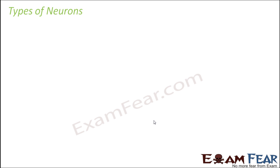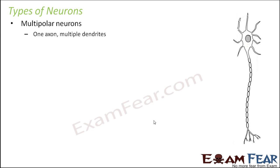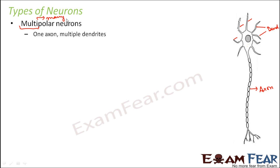We will now talk about the different types of neurons based on their structure. Broadly there are three types. First, multipolar neurons, where you have one axon and multiple dendrites. Please remember that the number of axons is always going to be one — there cannot be multiple axons. So the axon is just one, and you have multiple dendrites. That is why it is called multipolar.